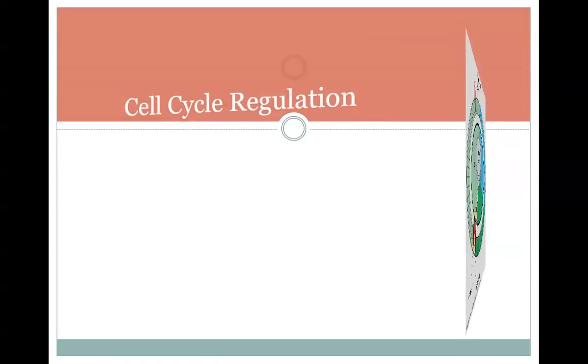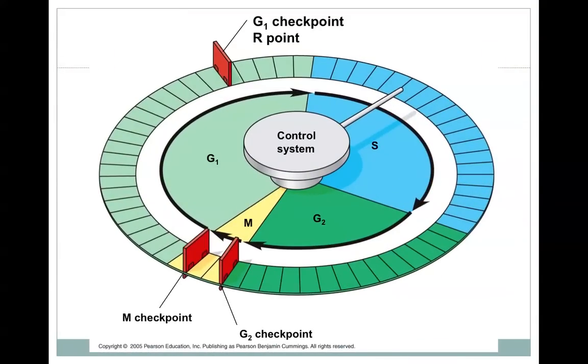So looking at the cell cycle itself, how is this regulated? We don't want cells just dividing whenever they want to. There are a few checkpoints within the cell cycle. So if you envision this cell as a clock, going around clockwise through G1 and S and G2 and then to M phase, there's three spots here where there are major checkpoints, where the cell has to complete certain tasks or have certain tasks done correctly in order to move on.